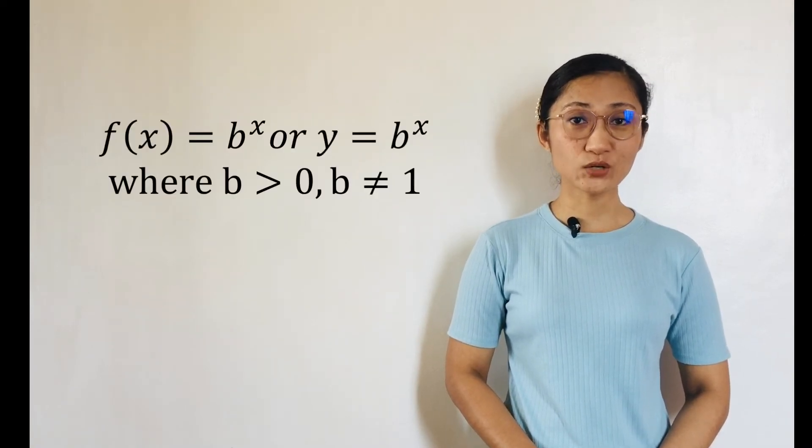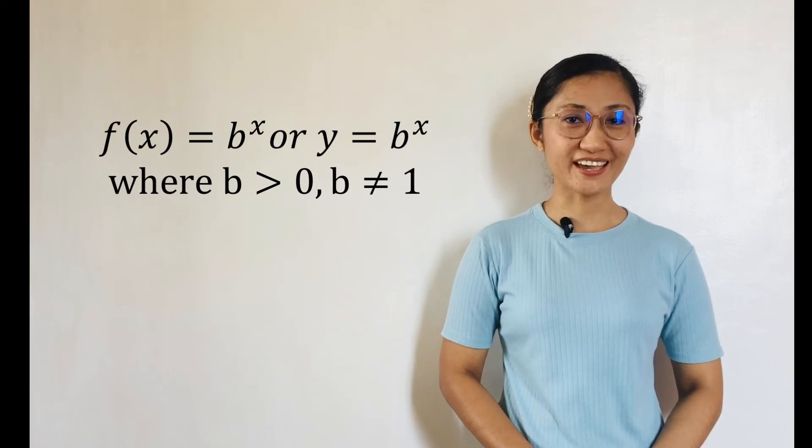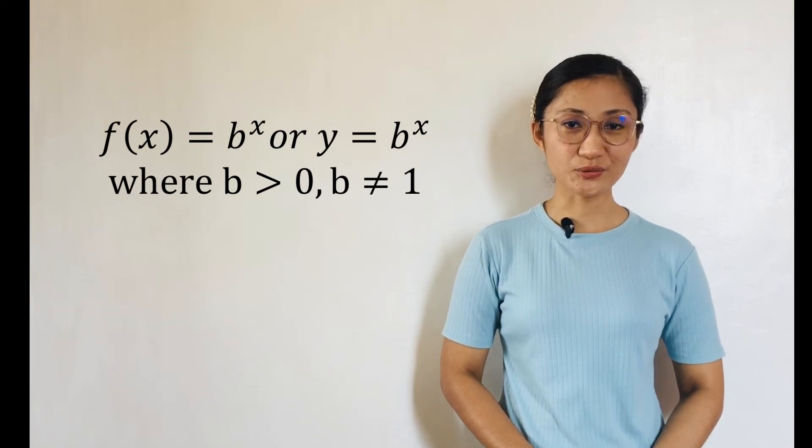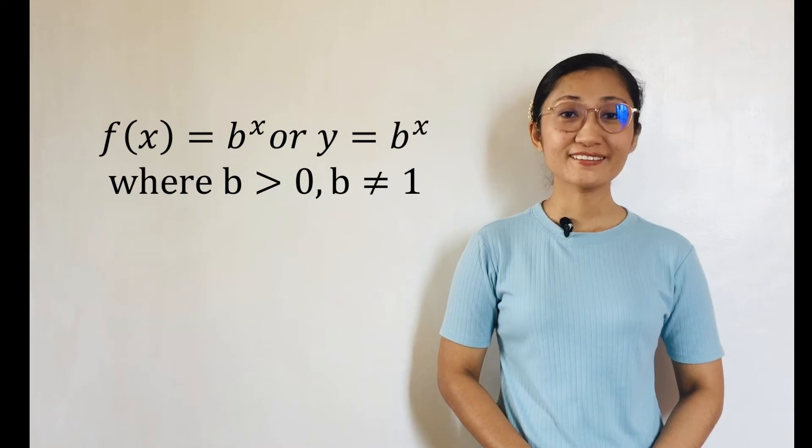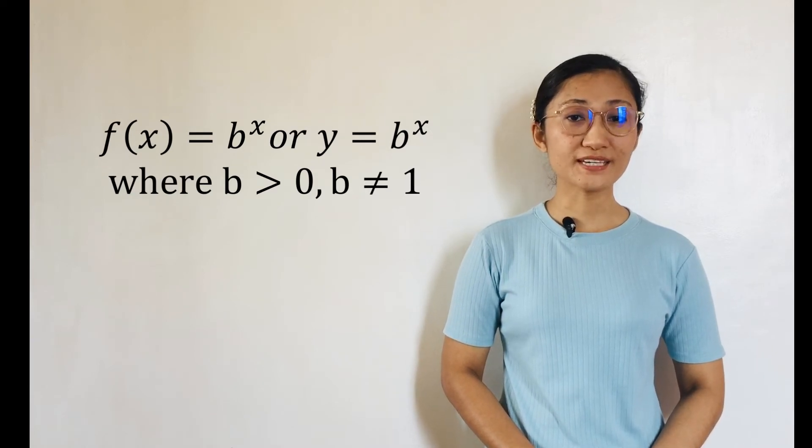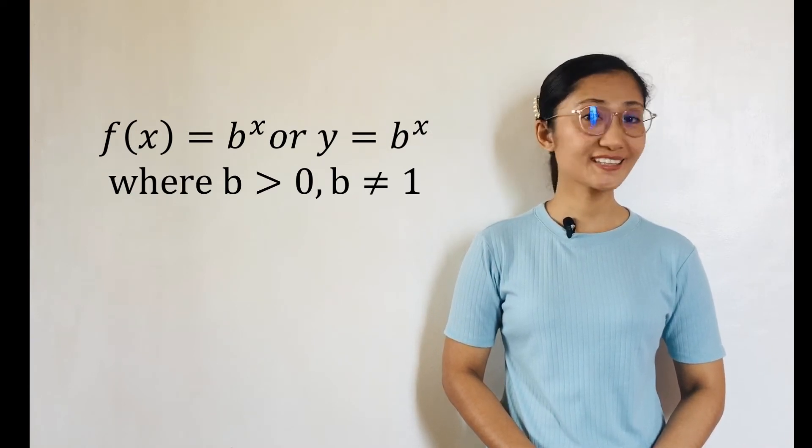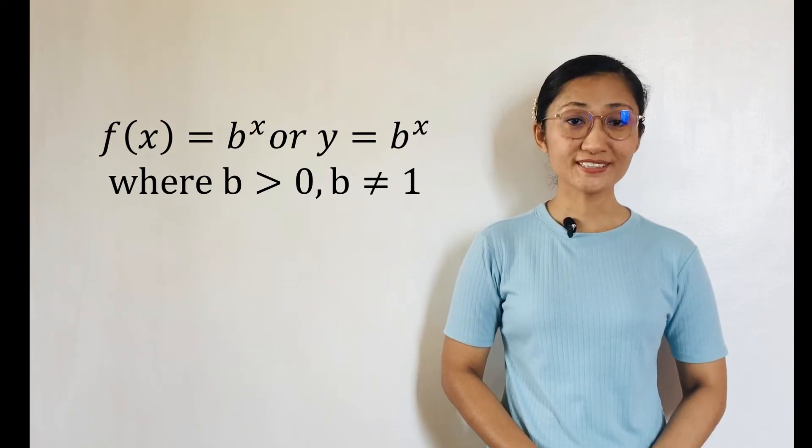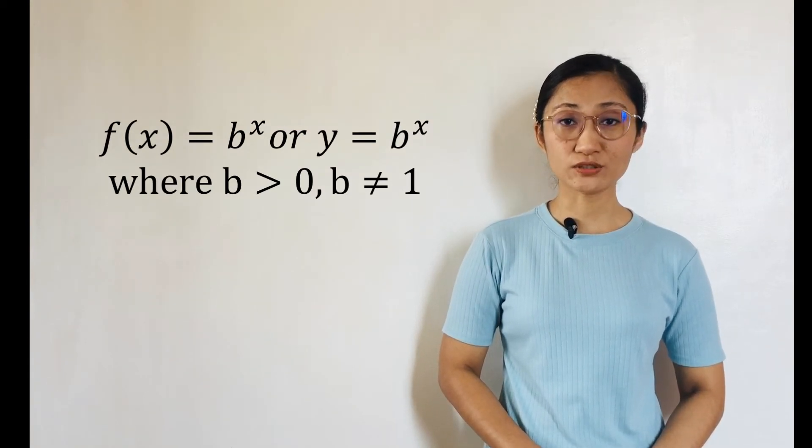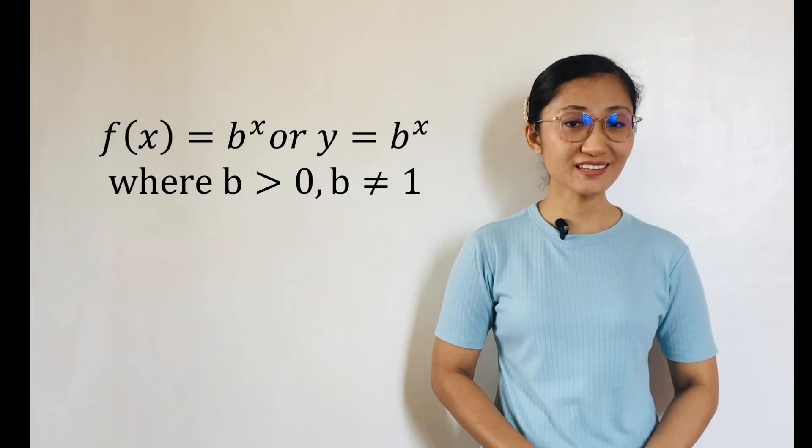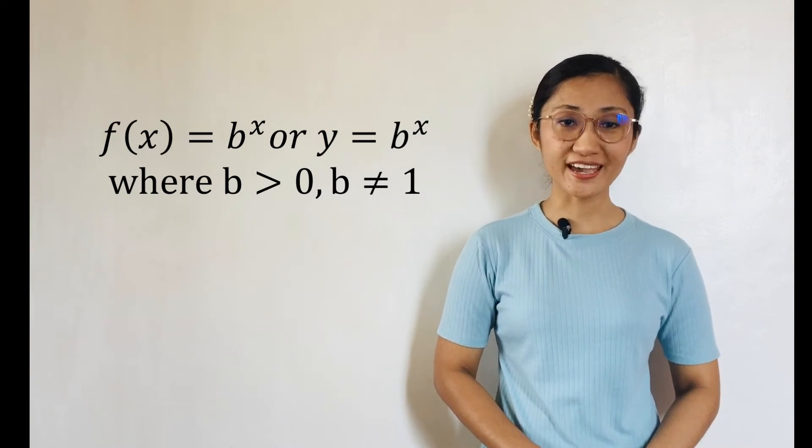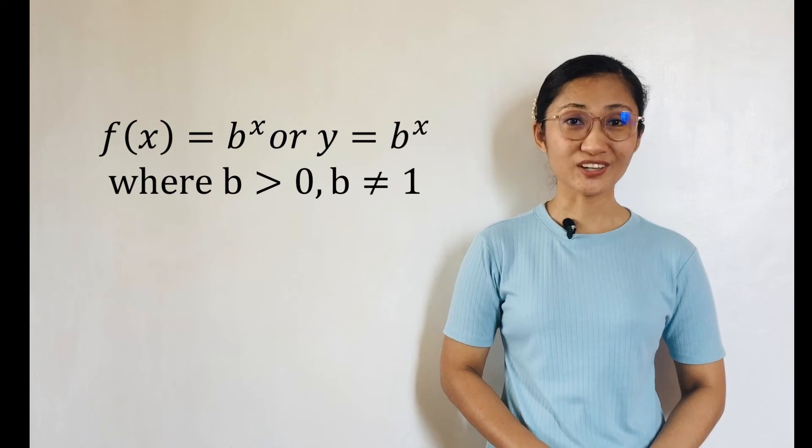An exponential function with base B is a function of the form F of X equals B to the X, or Y equals B to the X, where B is greater than 0 aside from 1. While the base B can be any positive number, it cannot be 1. Notice that one distinguishable feature of an exponential function is that the independent variable, which is usually X, is an exponent.